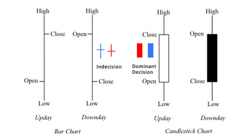Longer candle bodies demonstrate strong momentum and decisive market behavior in the movement from open to close. Longer shadows, however, demonstrate increased volatility, since some prices were reached during the time period but ultimately excluded from the range between open and close.